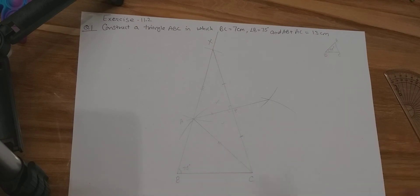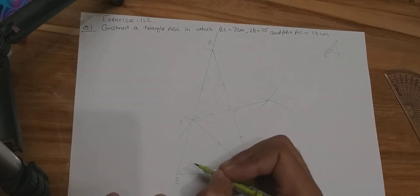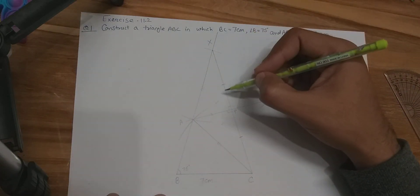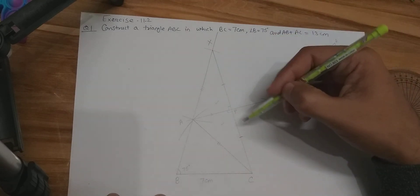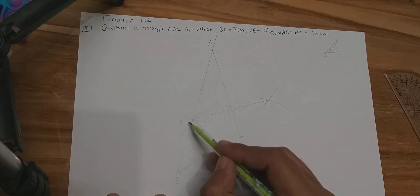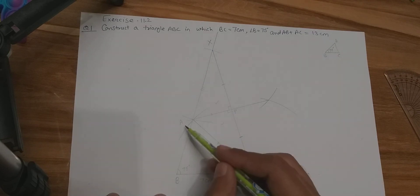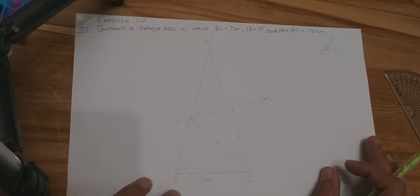This completes the construction of question number 1. The steps to write are: first, draw BC equal to 7 cm; at B draw an angle of 75 degrees; mark BX equal to 13 cm on the ray; join X with C; draw the perpendicular bisector of XC, which intersects BX at point A; join A with C. Triangle ABC is the required triangle.